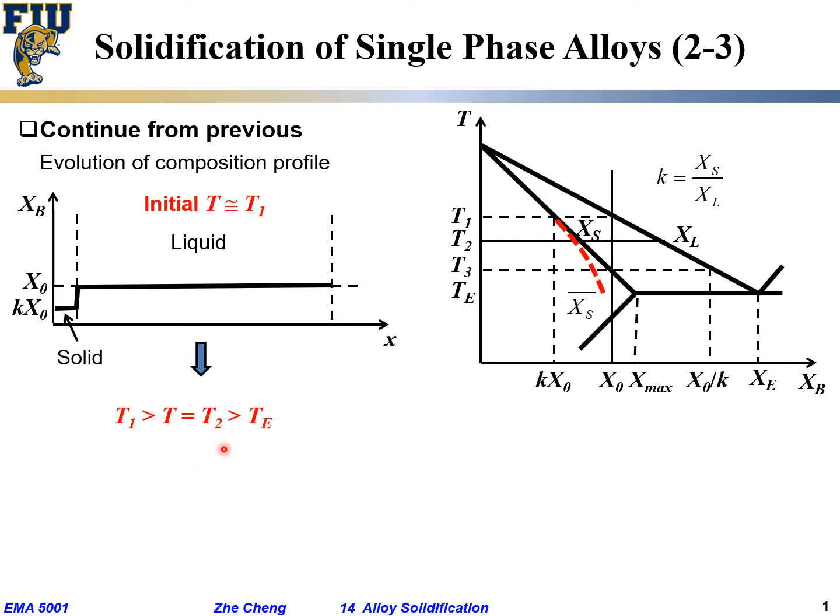Then, if we are going to draw the composition profile, still composition profile is change of composition with respect to location. And then remember, we said no diffusion in solid, but within the liquid, I have stirring, forced stirring, uniform liquid. So within the liquid, my composition should be flat, same, uniform.